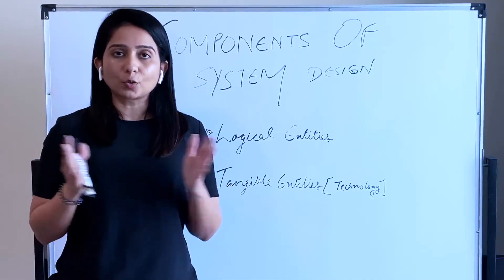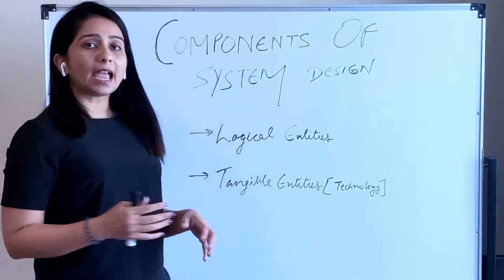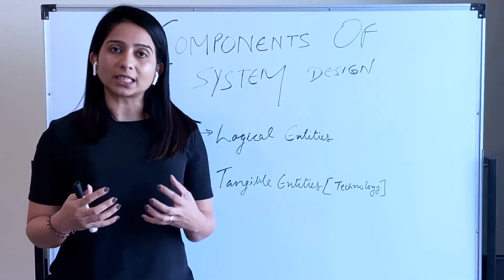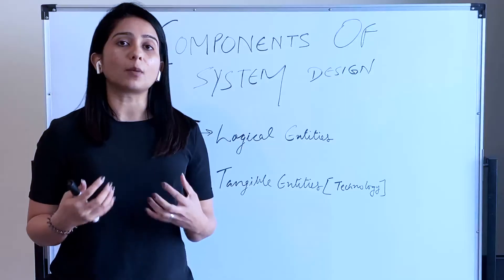Components can be divided into two parts: logical entities and tangible entities. First, let's understand what are the logical entities that are responsible for making up a system.